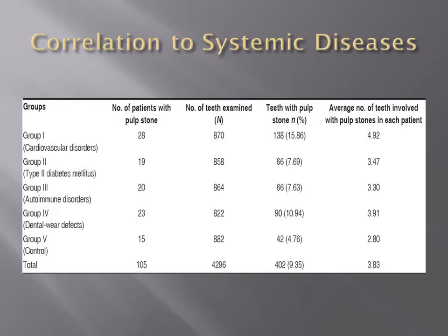Group 4, which is dental wear defects, has a higher 10.944% of teeth with pulp stones and almost 4 pulp stones per patient. Group 5, which is the control, only has 4.76% of the teeth with pulp stones and 2.8 pulp stones per patient.